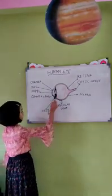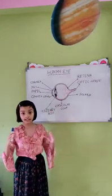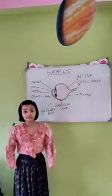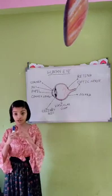Ciliary body. Ciliary body holds iris, pupil and convex lens together firm.